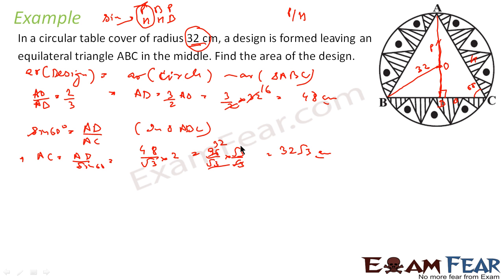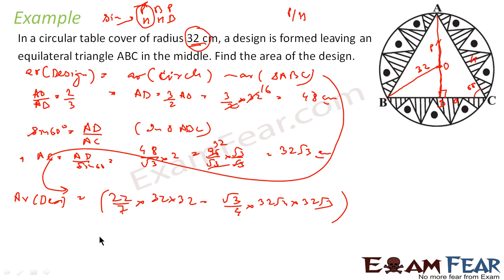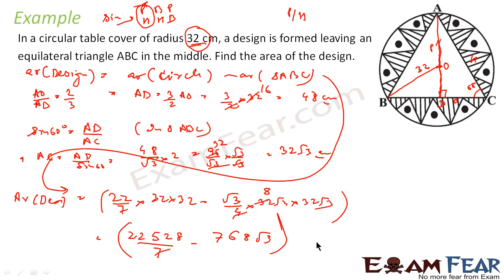So area of the triangle can now be found. Area of design equals area of circle minus area of triangle ABC. Area of circle is pi R squared: 22 by 7 into 32 into 32. Minus area of triangle, that is root 3 by 4 into side squared: side is 32 root 3, so 32 root 3 into 32 root 3. Solving this, you get 22528 by 7 minus 768 root 3. This is the area of the design in centimeter squared.